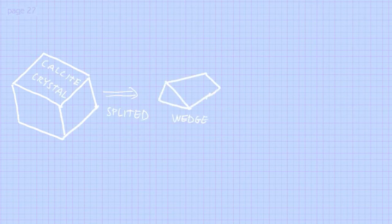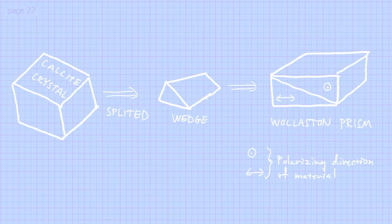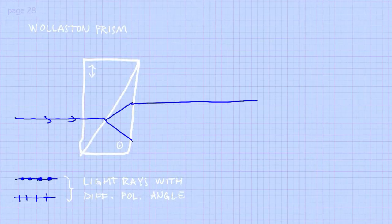So how do you transform this crystal into a usable differential interference contrast microscope? First you need to split this crystal into wedge-shaped forms, then combine two of these wedges into what's called a Wollaston prism. When you have made a Wollaston prism you actually create two of them. One you place above the light source beneath the condenser, and the other one is on top of the objective. The polarized light sent in from the light source goes through this crystal and is split up into two different pathways, giving two separated light waves.